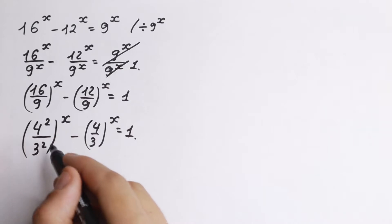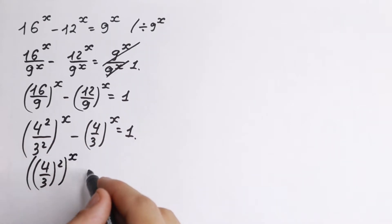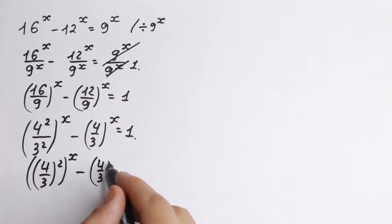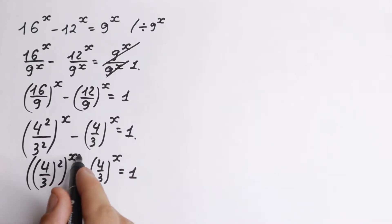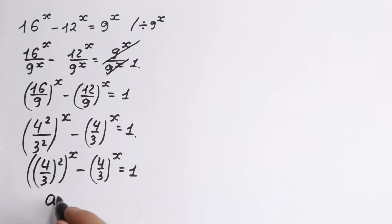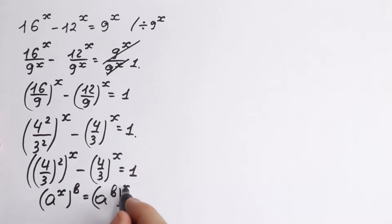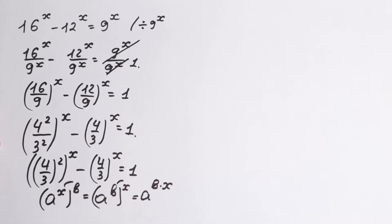We can write 4 squared over 3 squared as 4 over 3 squared, with the outside x, minus 4 thirds to the x, equal to 1. There are a lot of rules, and the main rule we need is the rule of interchange: if we have a to the x raised to the power b, we can write it as a to the power b raised to the power x. This is correct because we can write it as a to the power b times x, and since multiplication is commutative, we can swap b and x.